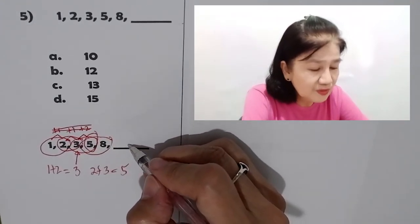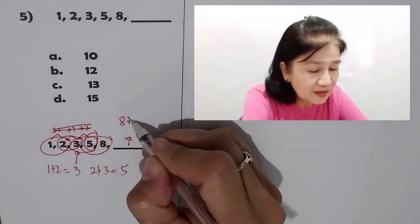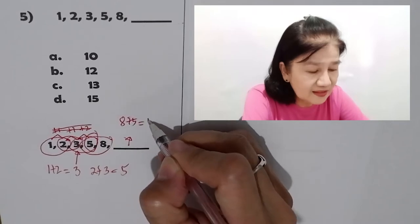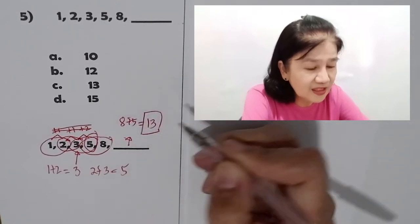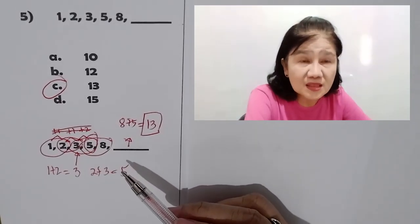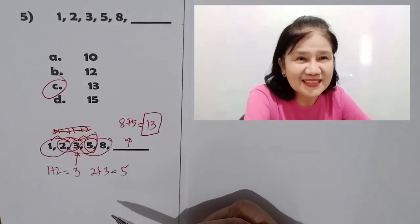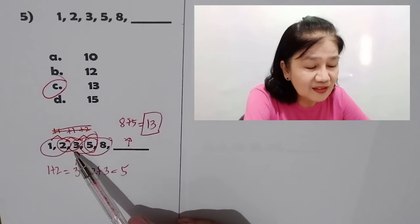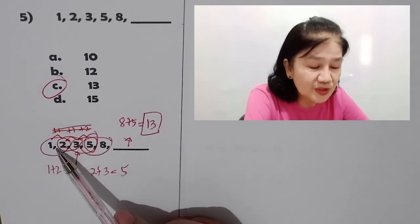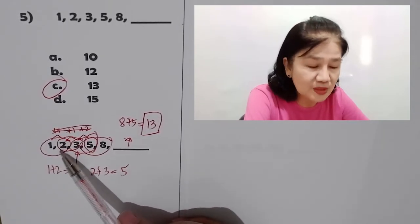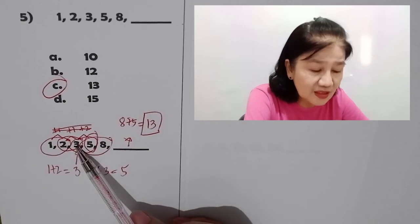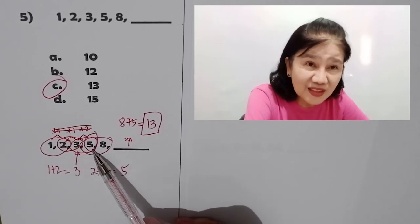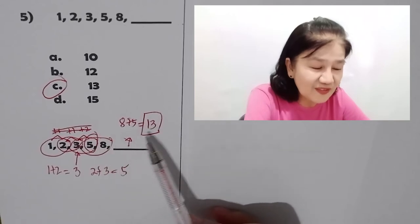So, 8 plus 5 will give you 13 there. So, the correct answer is 13. You actually call this Fibonacci sequence, where you get the next number by adding the first 2 previous numbers. 1 plus 2 is 3, 2 plus 3 is 5, 3 plus 5 is 8, 8 plus 5 is 13. Remember that.